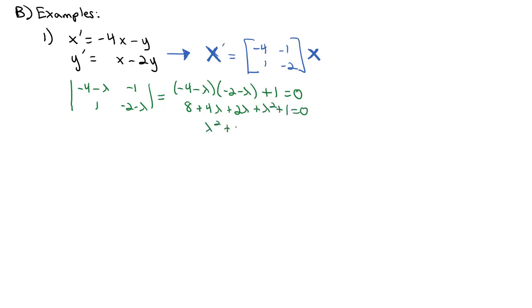Or lambda squared plus 6 lambda plus 9 equals 0. So lambda plus 3 squared equals 0, and lambda is, as expected, a double root at negative 3.